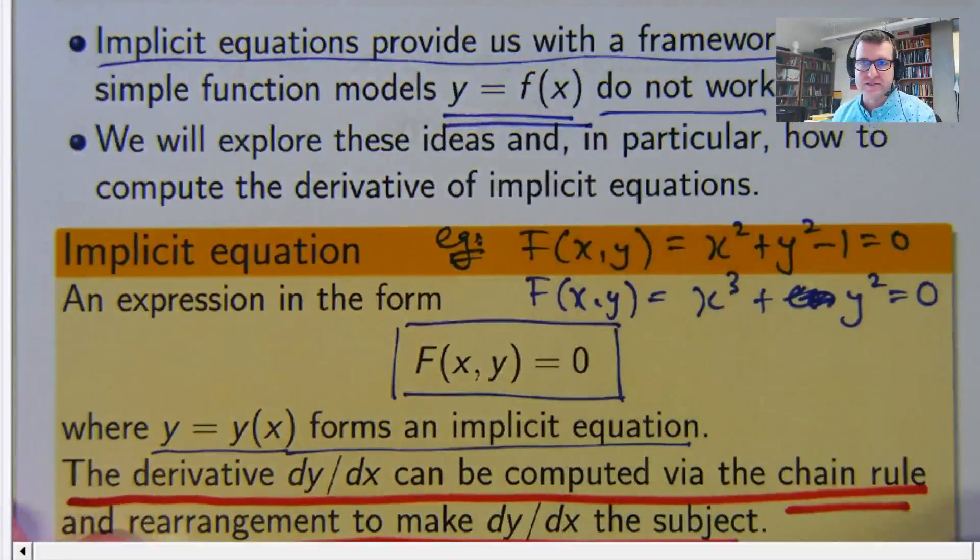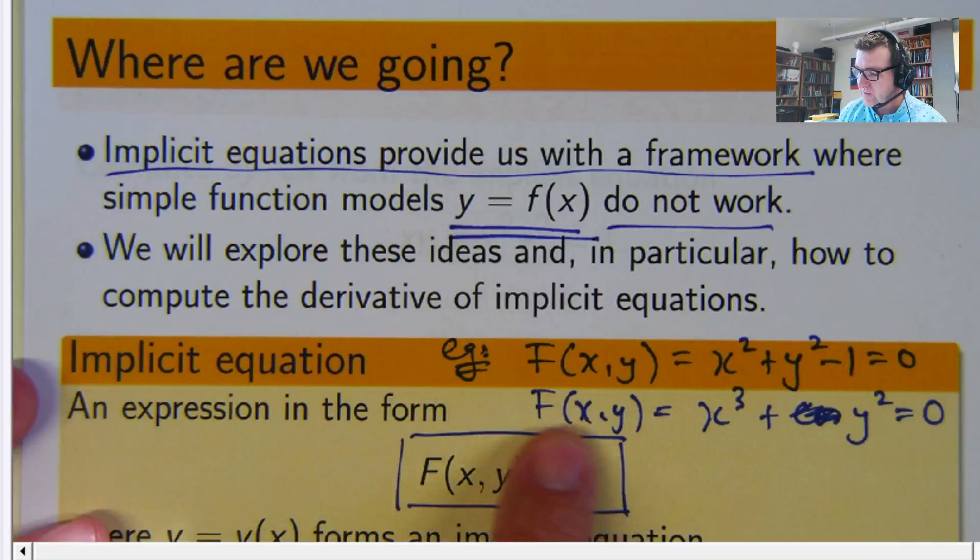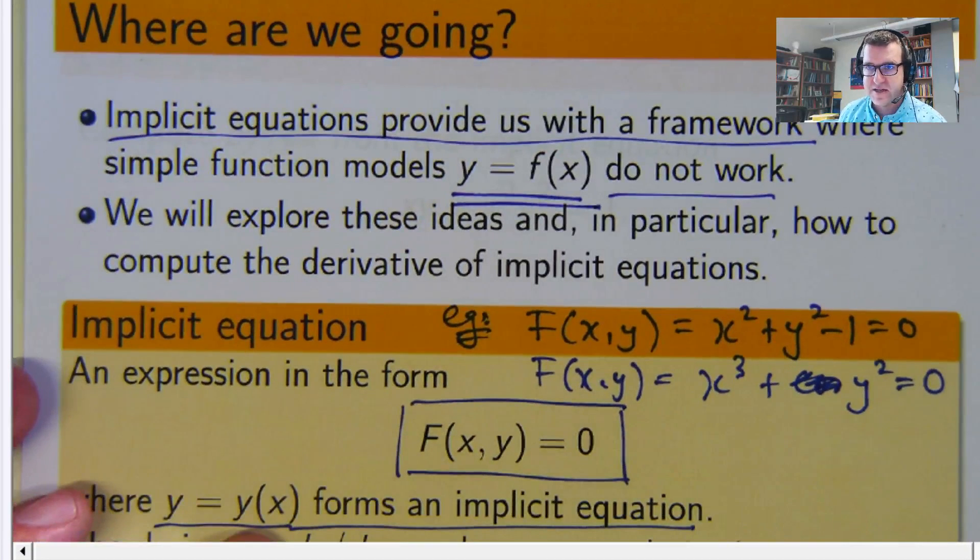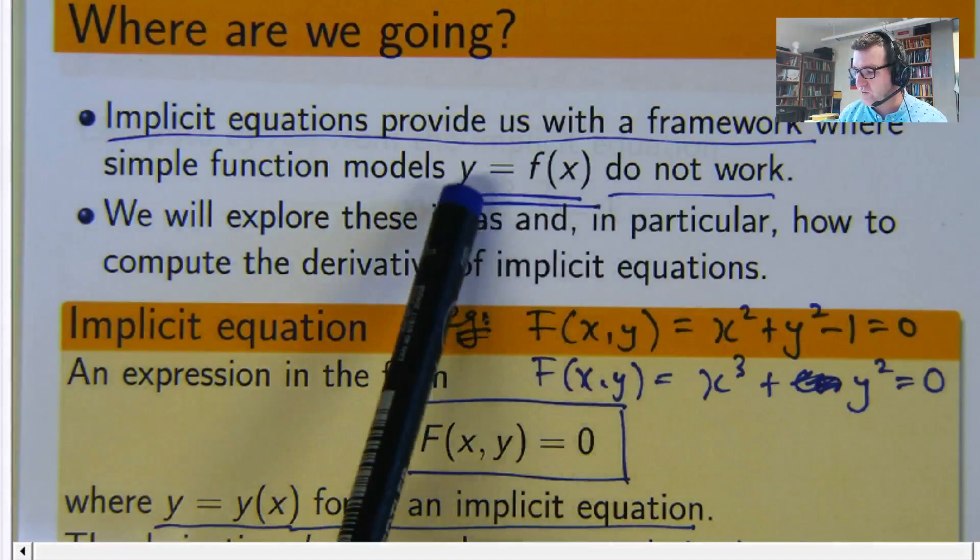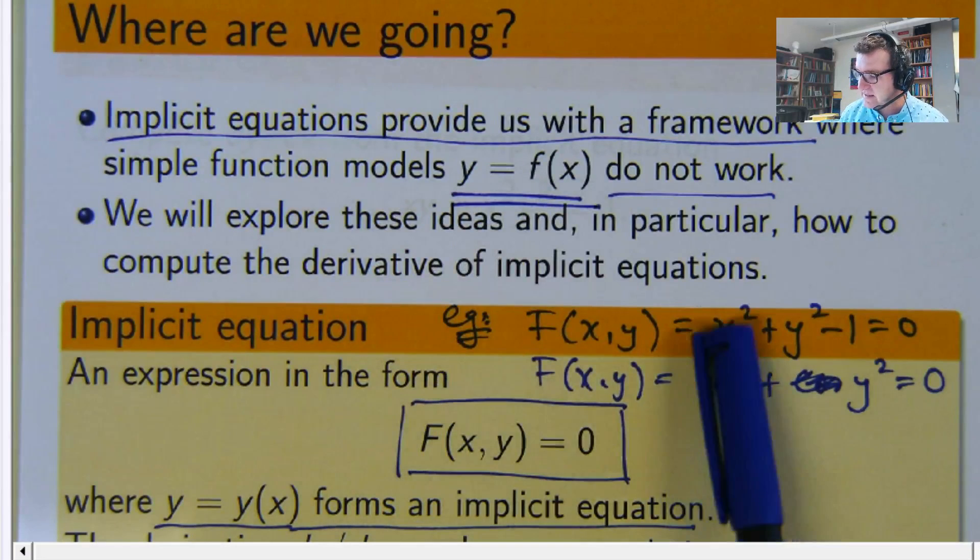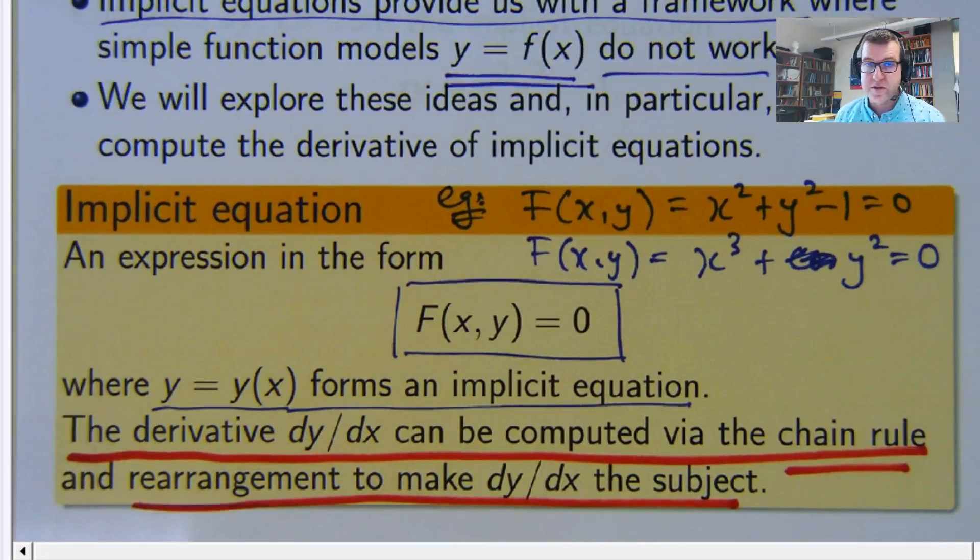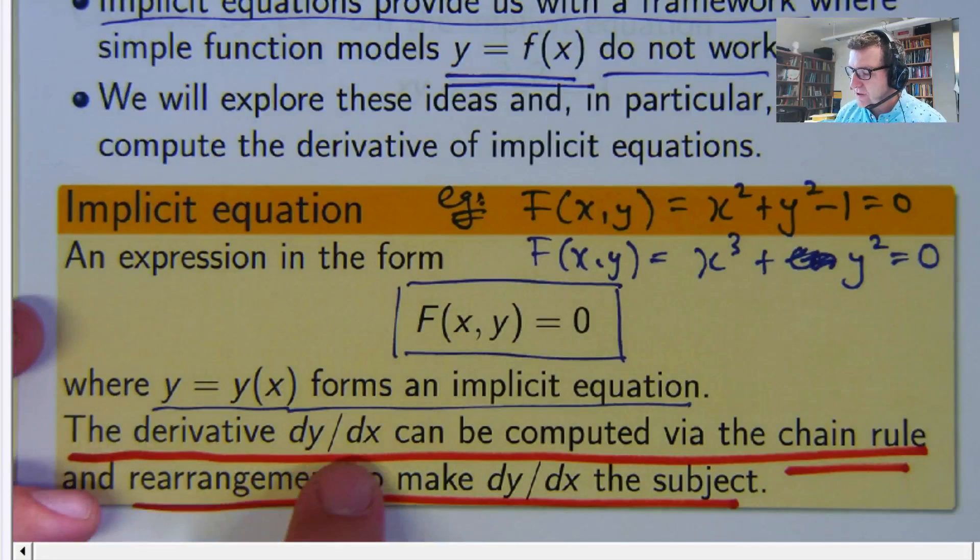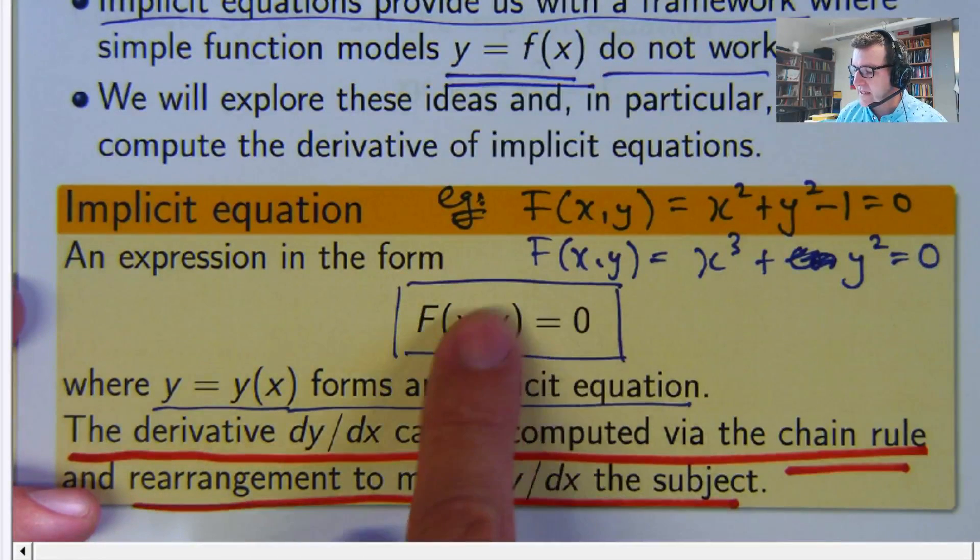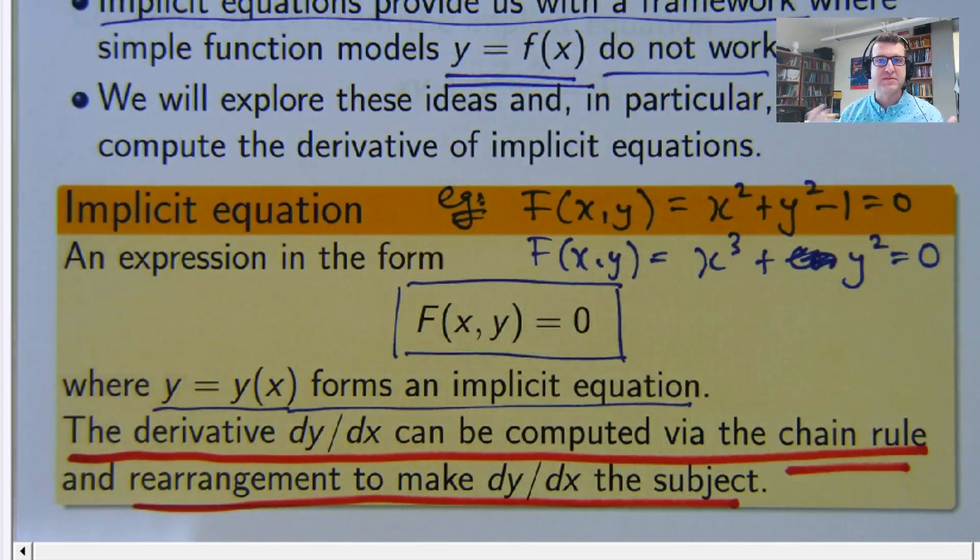So let's refresh our memories. Implicit equations are of this form where we assume that y is a function of x, and it's not easy or desirable to write it in the form y equals f of x. And the idea is to compute a derivative, because this is the subject of calculus. You can compute it by differentiating both sides of the equation and applying the chain rule and a rearrangement.